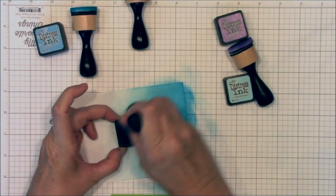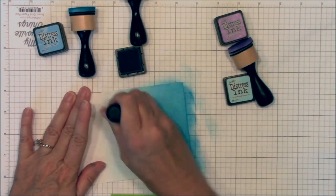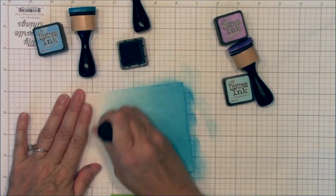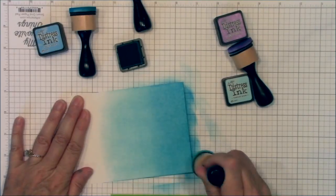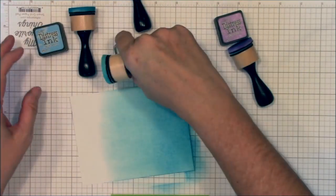So I'm ink blending with my mini ink blending tools, first with Tumbled Glass, then some Mermaid Lagoon, and then Salty Ocean. I finish it off with another layer of Tumbled Glass just to get the other colors to blend seamlessly.